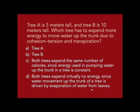Consider: tree A is 5 meters tall and tree B is 10 meters tall. Which tree has to expend more energy to move water up the trunk due to cohesion-tension and transpiration? Actually, neither tree expends metabolic energy — there are no ATPs involved. It's entirely a passive process caused by evaporation of water from the leaves drawing water up through the entire plant. A bigger tree just has more leaves.